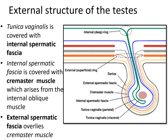The tunica vaginalis is covered with the internal spermatic fascia. The internal spermatic fascia is covered by the cremaster muscle, which arises from the internal oblique muscle. The external spermatic fascia overlies the cremaster muscle, and the external spermatic fascia is again overlaid by the dartos. These are the different layers of the scrotum.